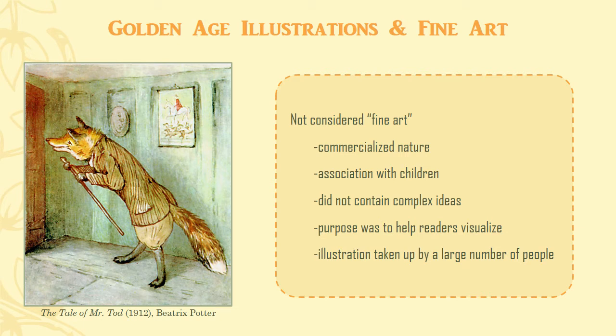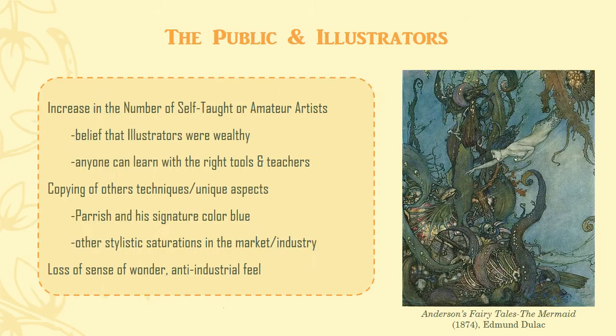Yet artists were proud to see their work reach such a large audience, and could make a good living off of their work. However, fame and wealth encouraged more people to take up illustration, reducing its reputation even further. The number of people learning to become an illustrator increased during the Golden Age's decline, as did teachers and tools for illustrative instruction. The most popular artists — Howard Pyle, Arthur Rackham, and Maxfield Parrish — had their techniques, styles, and signature aspects copied, most famously the specific color of blue Parrish used in his mythological nude paintings and prints. The market soon became saturated with illustrators and similar illustrations, and with it, the sense of wonder and anti-industrial feel essential to the movement was lost.